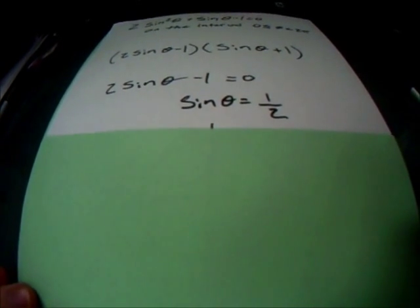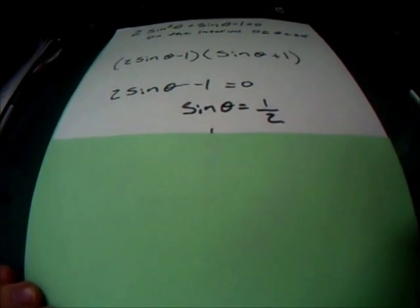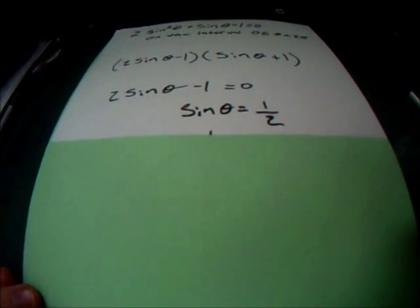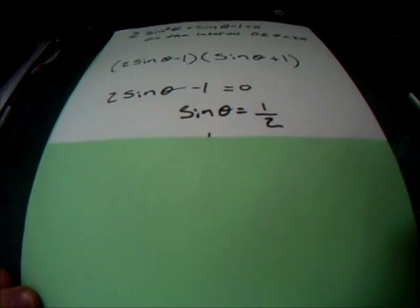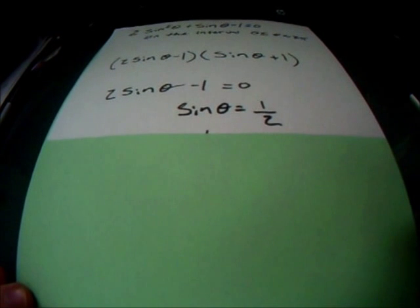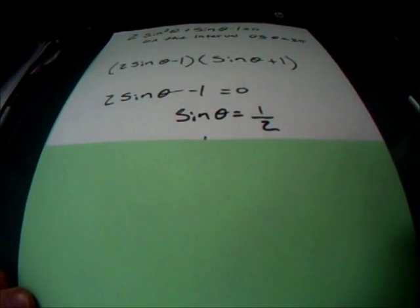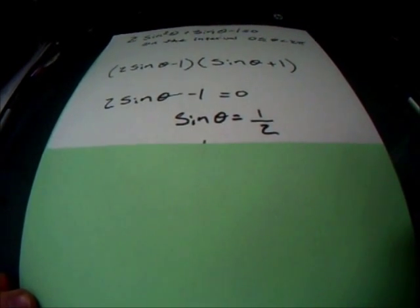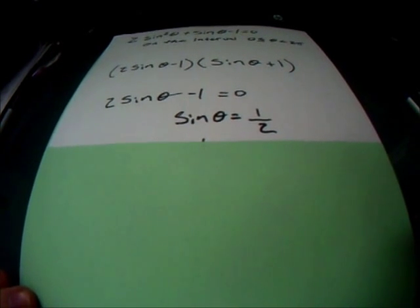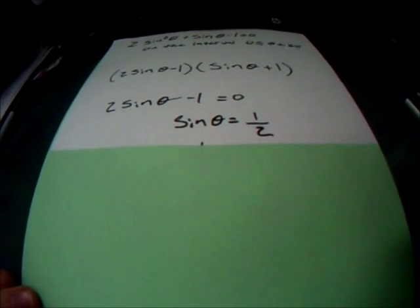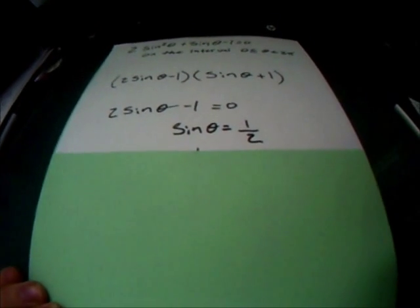Now, the next part, we need to look at the unit circle and figure out where sine is 1 half. Sine theta, that is the y value on the unit circle. So we need to figure out where y is positive 1 half.